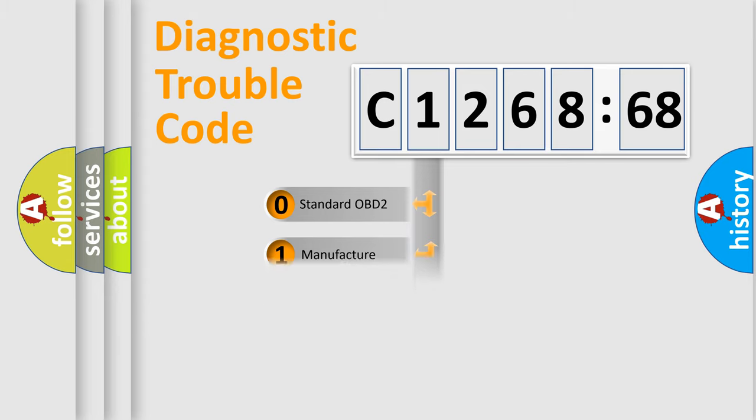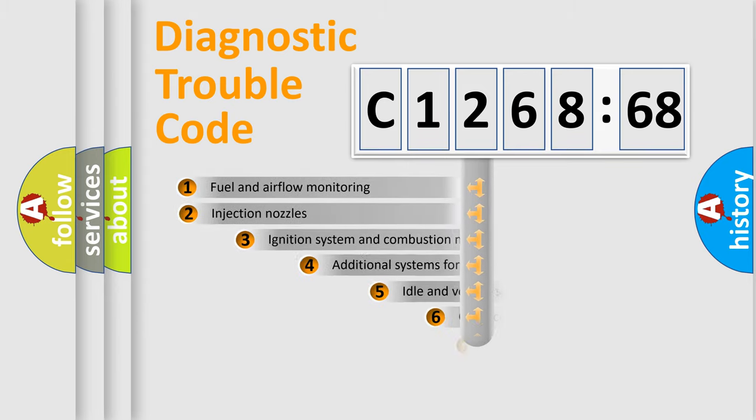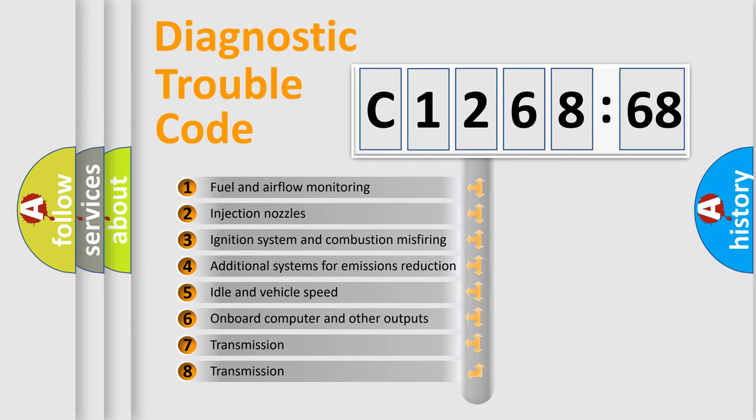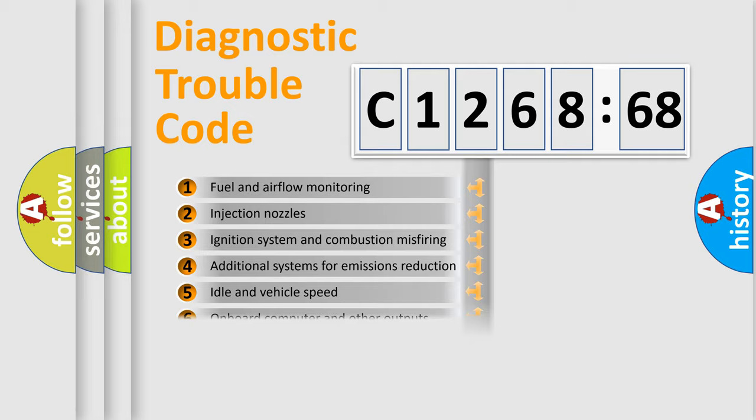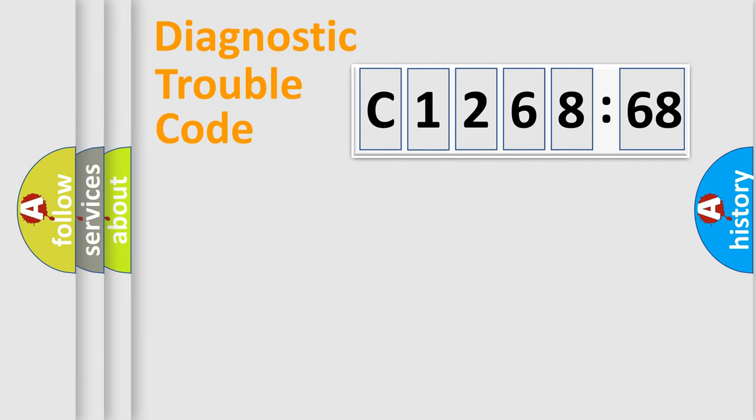If the second character is expressed as zero, it is a standardized error. In the case of numbers 1, 2, 3, it is a more precise expression of the car-specific error. The third character specifies a subset of errors. The distribution shown is valid only for the standardized DTC code. Only the last two characters define the specific fault of the group.